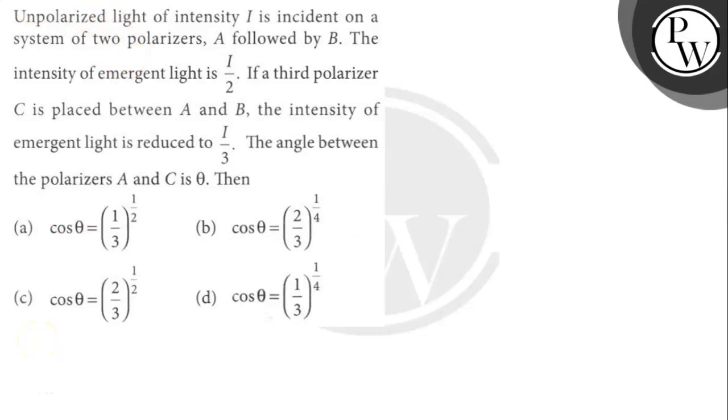Let's read the question. Question says here. Unpolarized light of intensity I is incident on a system of two polarizers, A followed by B.